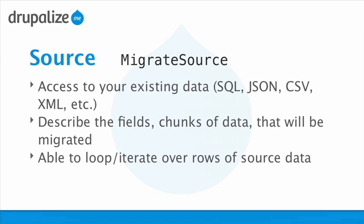In addition to extracting data, a source migration plugin is also responsible for describing that data to the migrate module. It has to describe the different fields or chunks of data that make up the source. For example, if you have a CSV file, the source needs to describe what each column represents, so that we know what we're dealing with when mapping data from source to destination. Source plugins are also responsible for looping over rows of source data, iterating over each individual row and handing them to the migrate module one at a time.